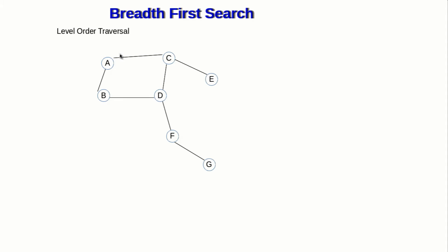Using our example graph, I can select any arbitrary vertex as the start vertex — let's select A. We always say that the root or start vertex is at the zeroth level. All vertices connected by only one edge to the root are at the first level, so B and C are at the first level. Vertices D and E have a two-edge path from A, so they are at the second level. Similarly, F is at the third level and G is at the fourth level.